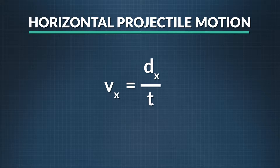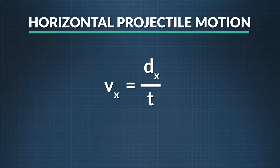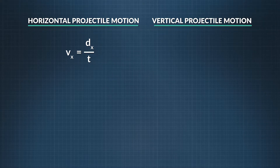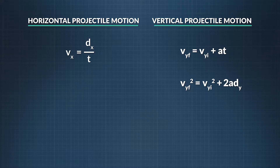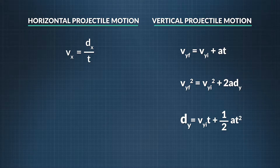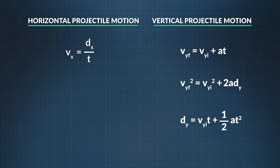You only need one equation to solve for an unknown in the horizontal direction: velocity equals distance divided by time. That's because there's no acceleration in the horizontal. In the vertical direction, we're feeling the effects of gravity constantly accelerating downward, so we use three equations that have acceleration in them: final velocity equals initial velocity plus acceleration times time; final velocity squared equals initial velocity squared plus two times acceleration times displacement; and displacement equals initial velocity times time plus one-half acceleration times time squared.